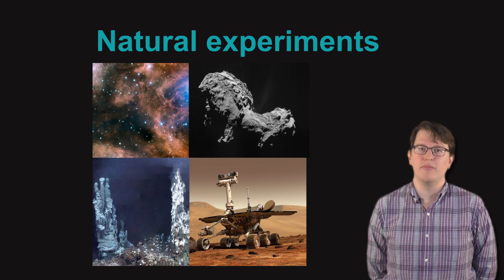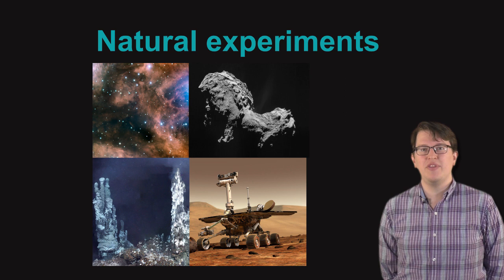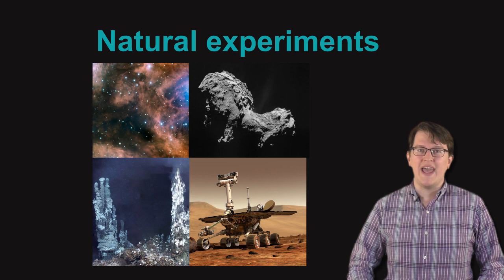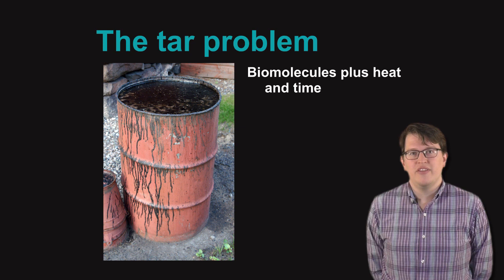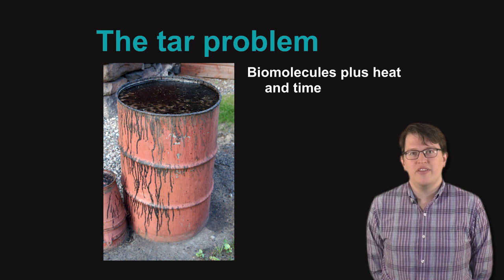And so another big question in chemistry in the origin of life is, well, how do we stop this from happening? What processes will allow these biological precursors to react and complexify and form molecules that look even more lifelike without turning into black sludge? And if we do make black sludge, can we recover that and turn it back into molecules that resemble the molecules of life? This is an open question in chemistry in the origin of life.